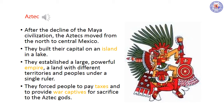Aztec. After the decline of the Maya civilization, people called the Aztecs moved to central Mexico from the north. In 1325 they built their capital on an island in a lake. This capital grew into one of the largest and most impressive cities of its time. The Aztecs also built a large, powerful empire. An empire is a land with different territories and peoples under a single ruler. The Aztecs built their empire through conquest — they defeated neighboring tribes in war, then forced other peoples to pay taxes and provide war captives for sacrifice to the Aztec gods.